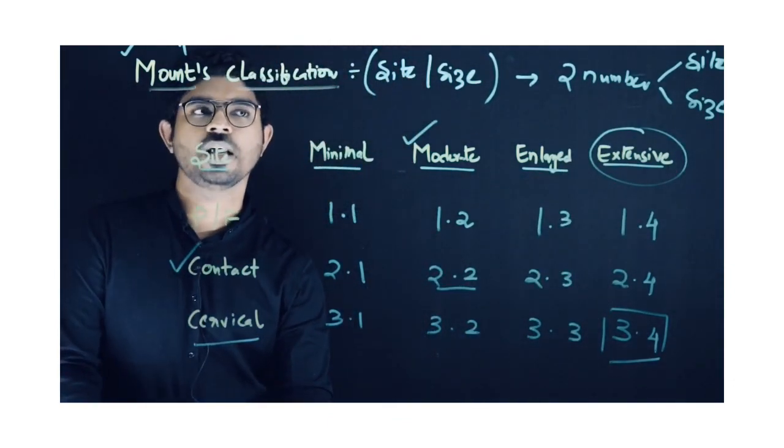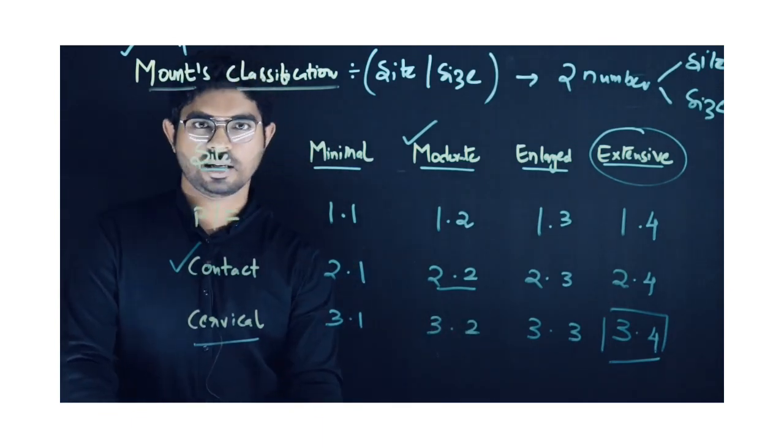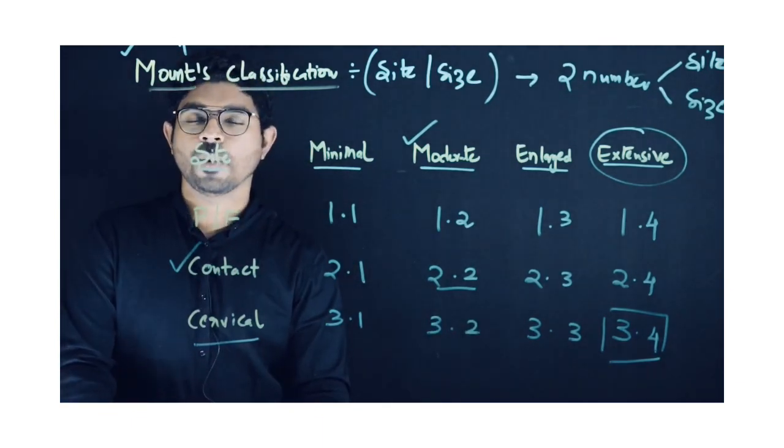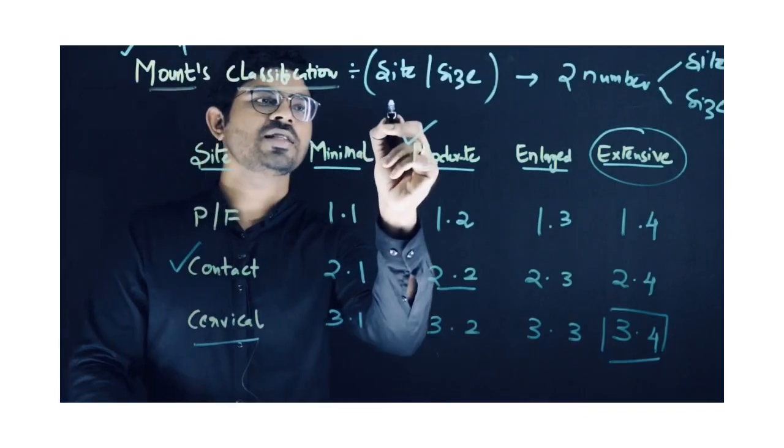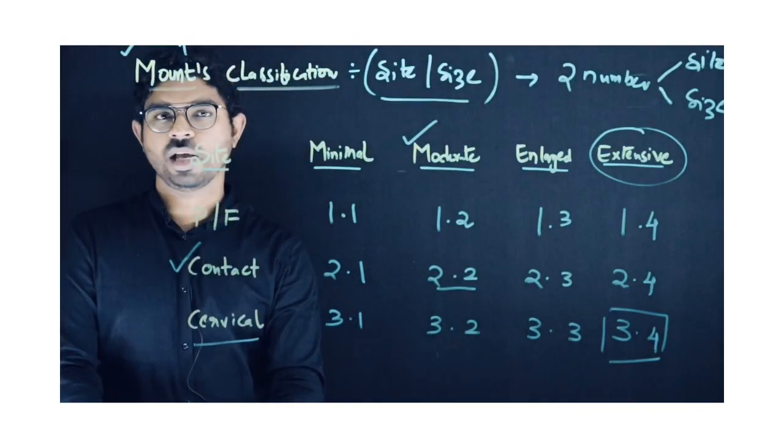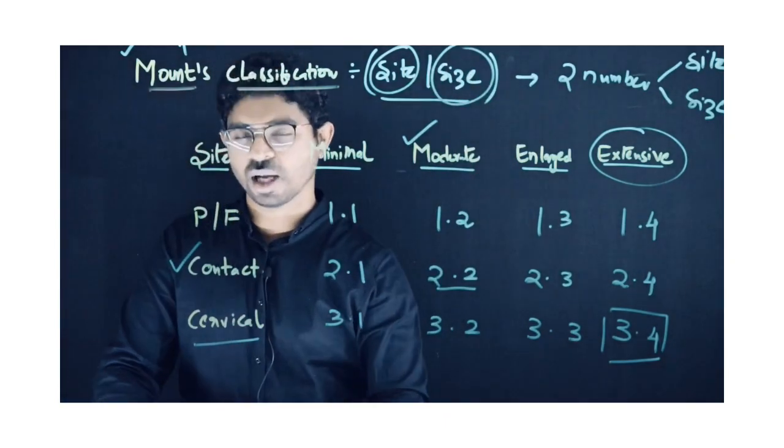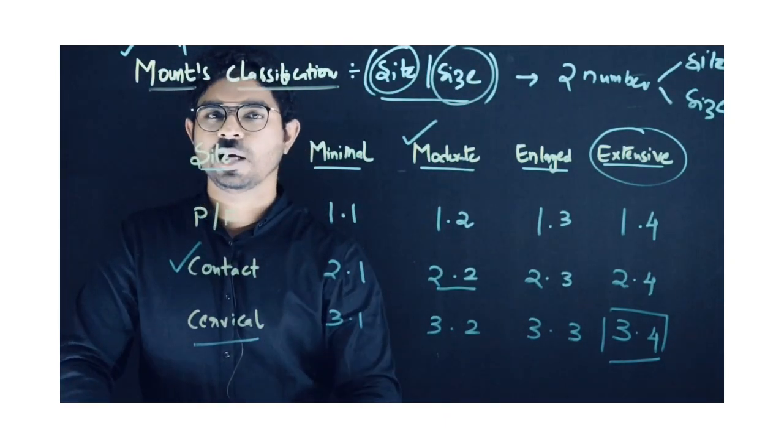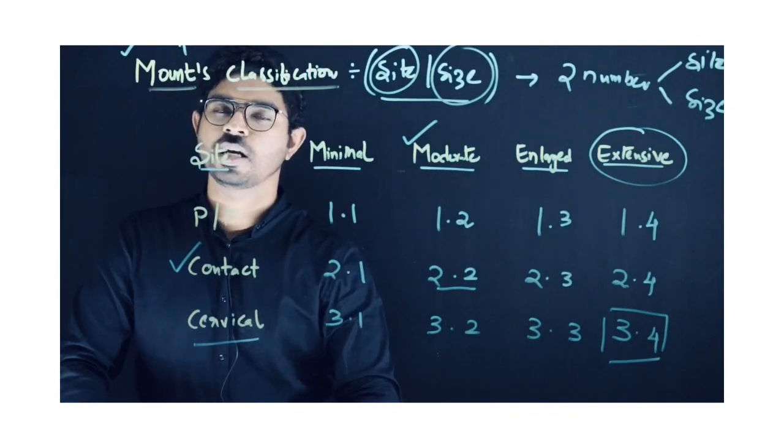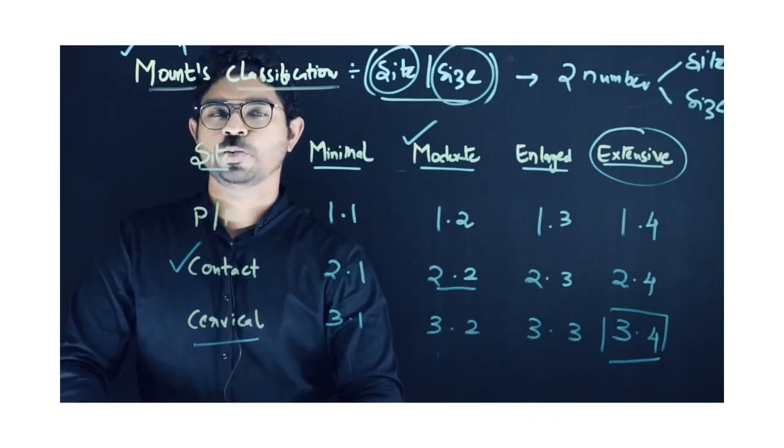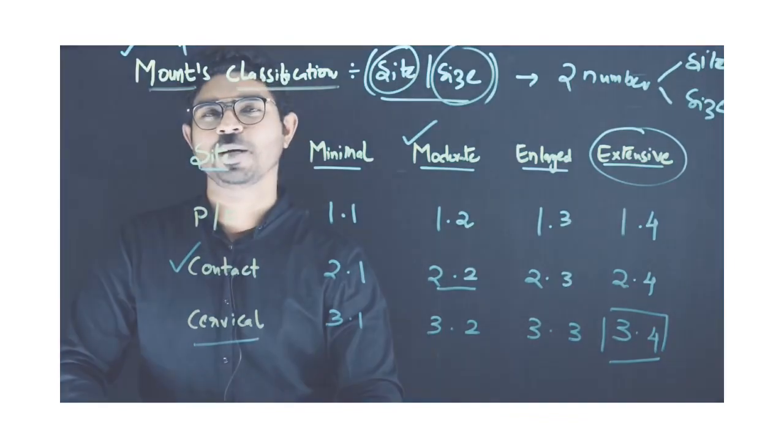cannot be restored. This is the number magic, the two-number magic of Mount's classification called site and size classification. Make a note: first number is site, second number is size. I'm done with this classification. Will be coming up with more videos. Stay tuned to our YouTube channel. Signing off, Dr. Srikant from Team MDS.